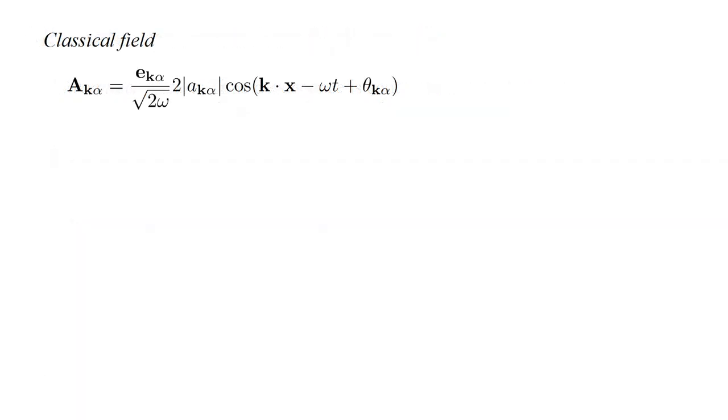As an example of the convenience of the Heisenberg picture, consider the classical field description of a single electromagnetic mode. A_kα equals unit vector e_kα over square root 2ω times 2 amplitude a_kα times cosine(k·x - ω t + θ_kα). Writing this in terms of complex exponentials, we get an expression with two terms.